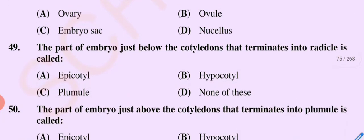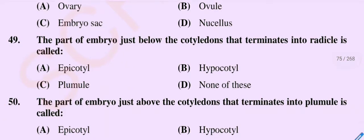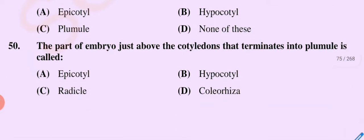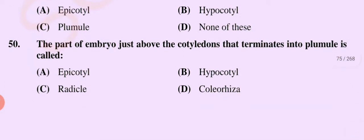Question number 49: The part of the embryo just below the cotyledons that terminates into the radicle is called — option A epicotyl, option B hypocotyl, option C cotyledon, option D none of these. The correct option is option B, hypocotyl.